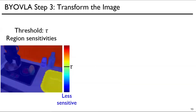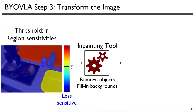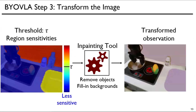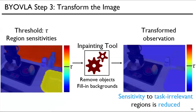Finally, regions whose sensitivity is greater than a user-defined threshold are inpainted, where objects are removed and backgrounds filled in with colors the model is not sensitive to. The result is a transformed image with lower model sensitivity to task-irrelevant regions.